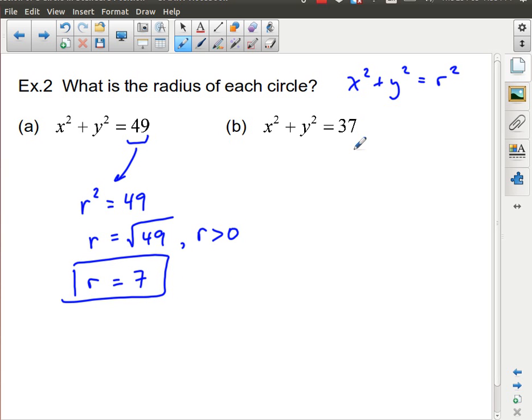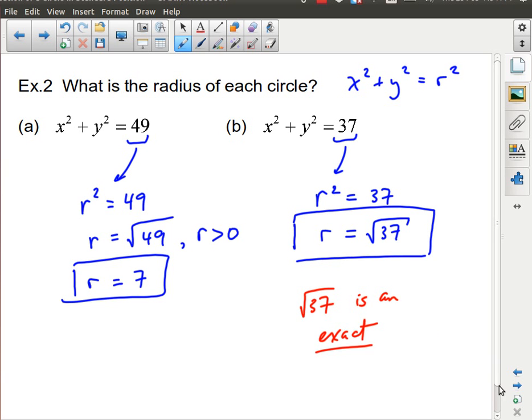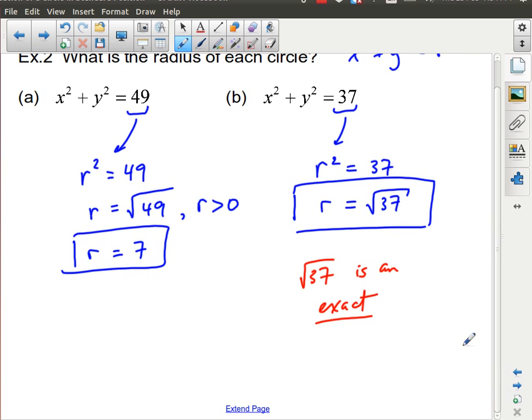In this case, we have r squared is equal to 37. So, r, now in this case, when we take the square root, we take the square root of 37. There's not much I can do with that. The square root of 37 is not a perfect square, as it was over here. So, I just leave this in this form. That is my final answer. And the reason I do that is because the square root of 37 is an exact value.